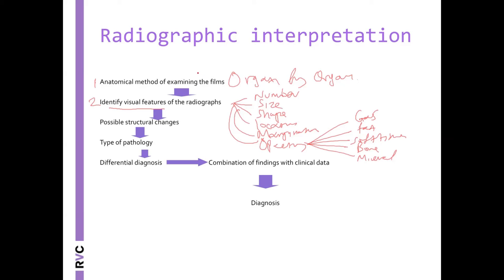Then, when we identify all the features, think what would be the structural change. For example, why does this lung lobe look increased soft tissue opacity? And usually, it boils down to cells or fluid. For example, in the lung lobe example, air has left the building and has been replaced by either cells, fluid, or a combination.